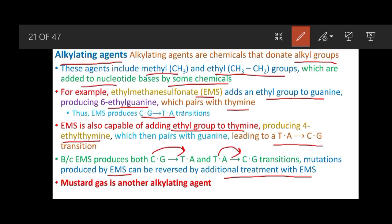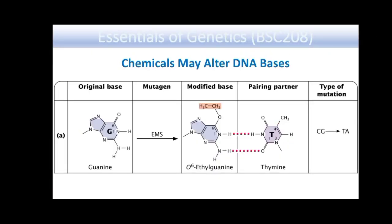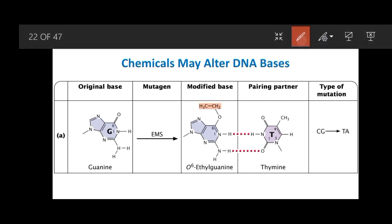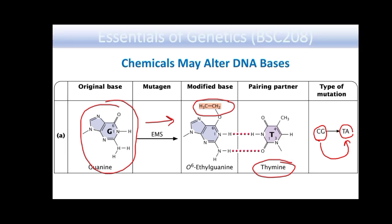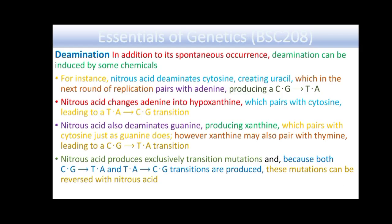Mustard gas is another alkylating agent used historically for creating mutations. When EMS treatment is applied to guanine, it provides an ethyl group. With the ethyl group added, the modified guanine can pair with thymine, changing a C-G base pair to a T-A base pair — cytosine is finally changed to thymine after replication.